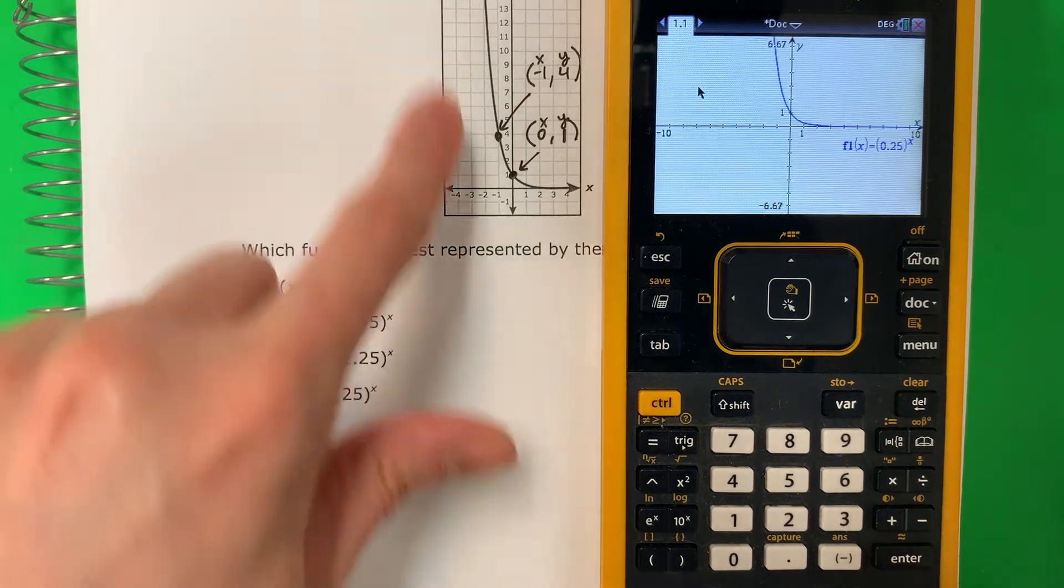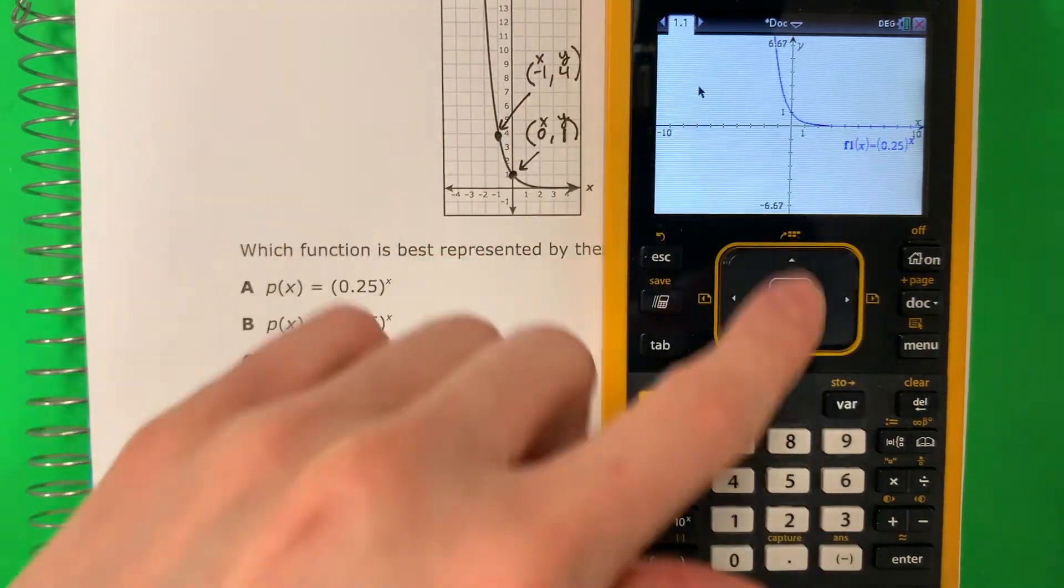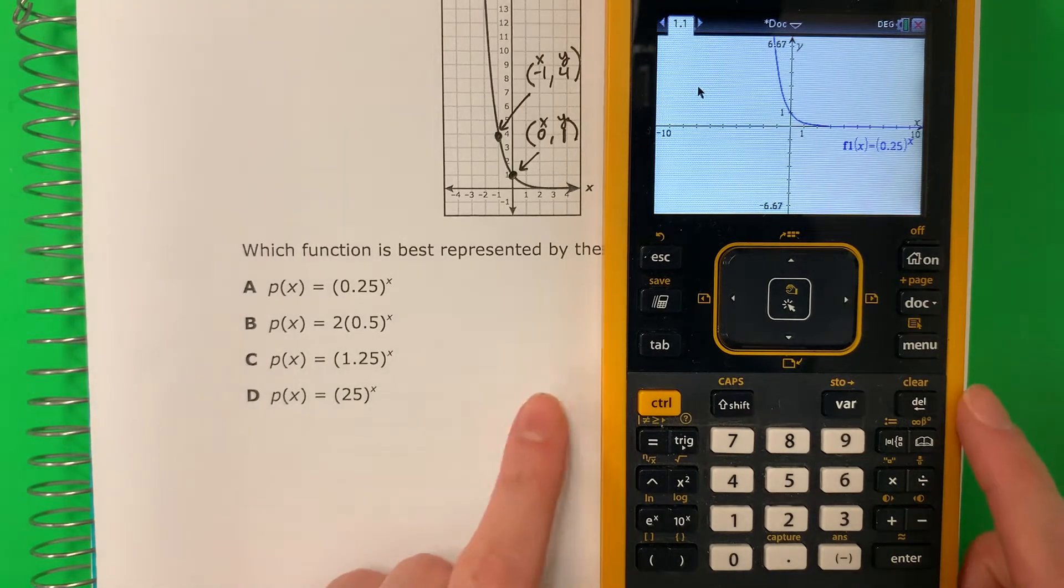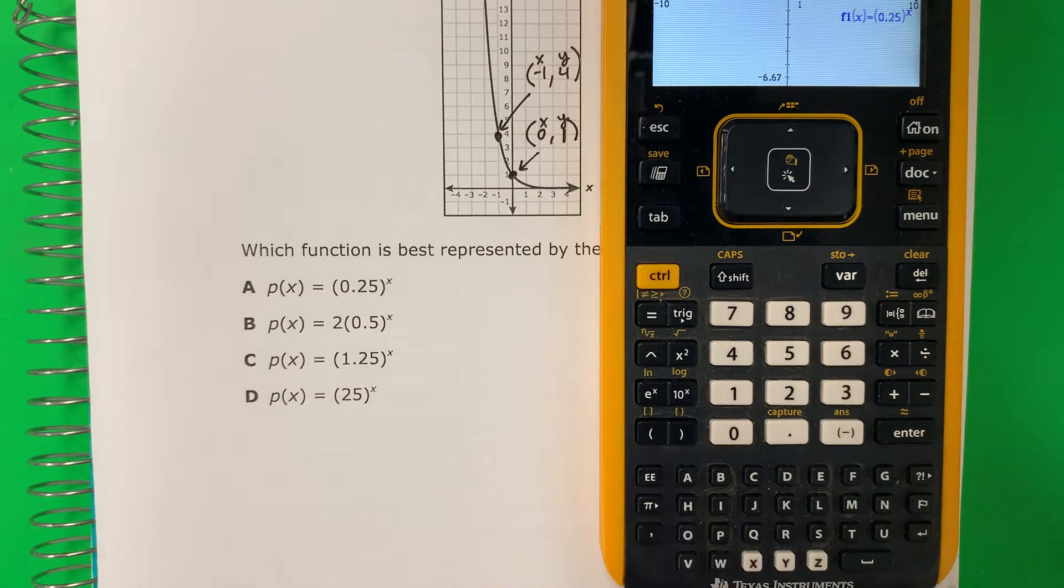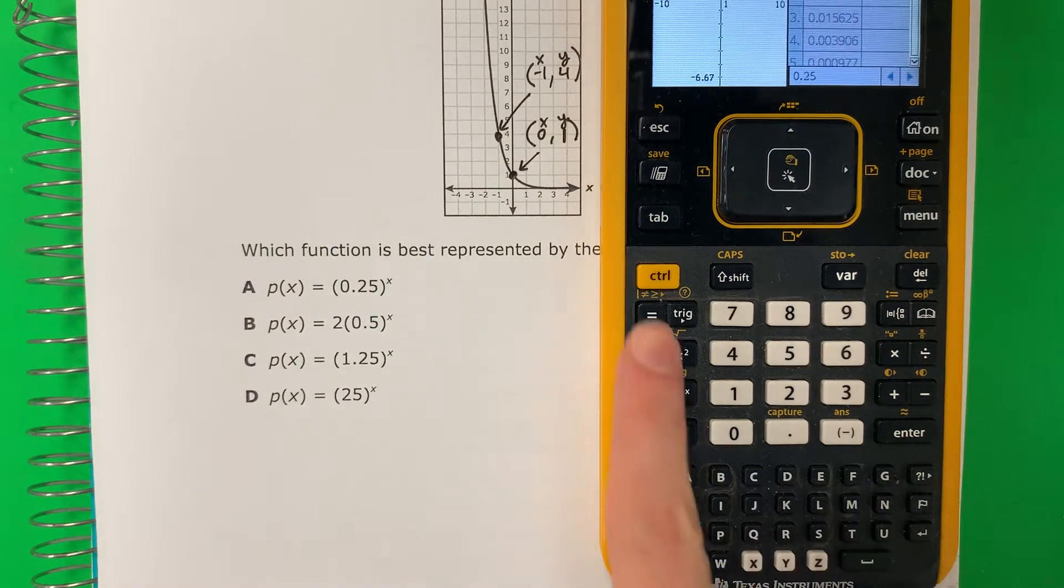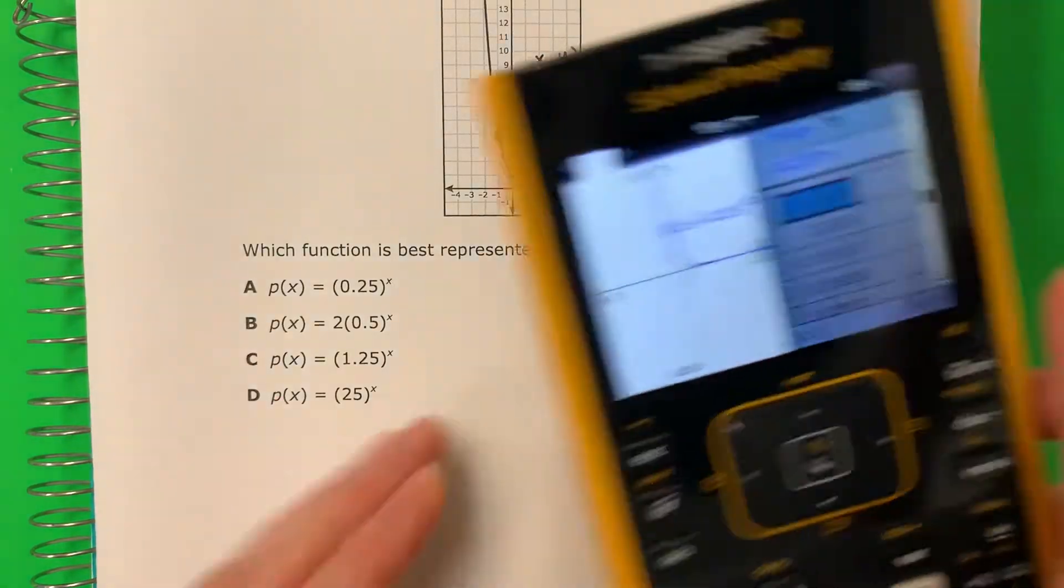So I have a table. Looks similar. I mean, we have a graph. Looks similar. Let's make a table. It's control T. Control T.